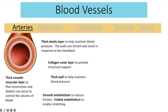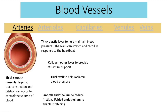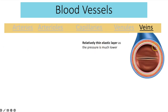Lining the lumen we have the endothelium, which has two key properties. First, it's very smooth to reduce friction as blood flows through. Second, the endothelium is folded — when you look under the microscope you'll be able to see this. The folds allow the artery to expand without tearing when it stretches, and when the artery recoils, the endothelium folds up again.